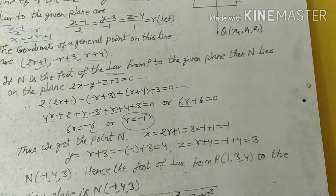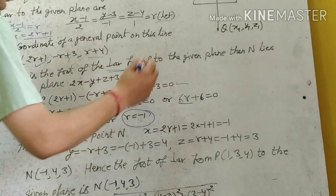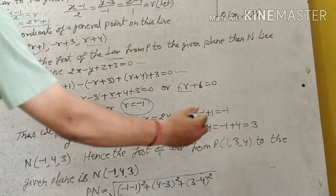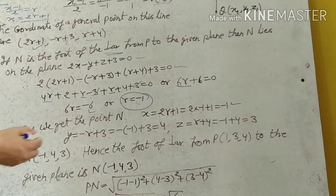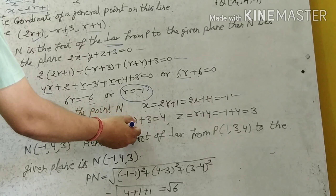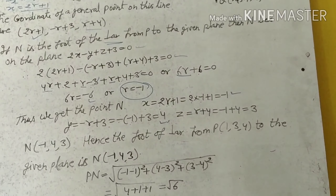Putting r equal to minus 1: x equal to 2(minus 1) plus 1 equal to minus 1; y equal to minus(minus 1) plus 3 equal to 4; z equal to (minus 1) plus 4 equal to 3. So the coordinates of N, the foot of the perpendicular from P to the given plane, are (minus 1, 4, 3).